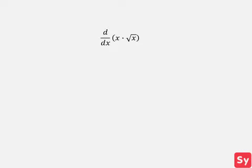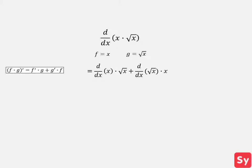Last example: we want to compute the derivative of x times the square root of x. We see that we want to take the derivative of two functions multiplied together, f and g, where f is equal to x and g is equal to the square root of x. So we can use the product rule to solve this. This equals the derivative of x times the square root of x plus the derivative of the square root of x times x.